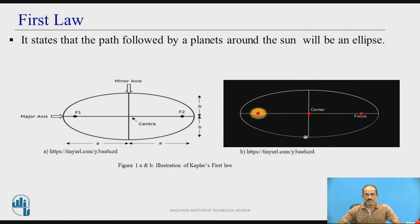We can see this diagram, figure 1A. It consists of two focuses, F1 and F2, and there is an elliptical path.